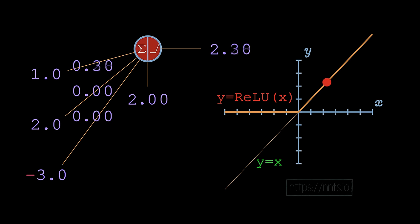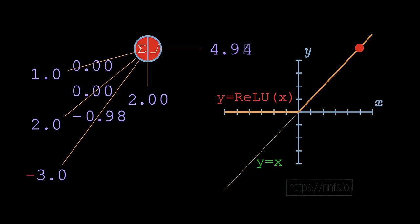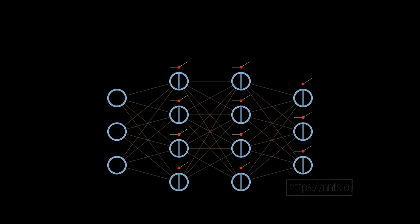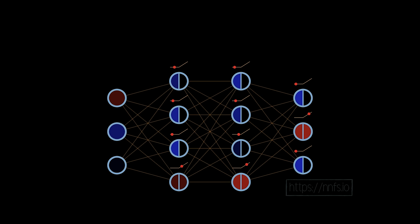Why use ReLU over sigmoid, which also gives granular output? Sigmoid has the vanishing gradient problem, which will make more sense once we get to gradients. Beyond that, there are two main reasons for ReLU: it's fast because it's a very simple calculation — just output x or zero — and it simply works. It's the most popular activation function for hidden layers.